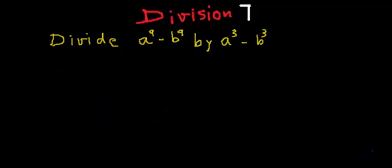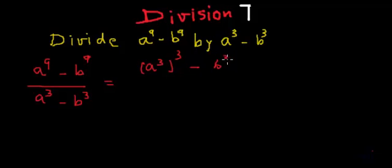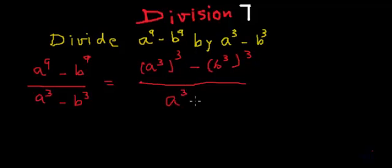So now let's rewrite our dividend in this format. a to the power 9 minus b to the power 9 divided by a cube minus b cube can be written as a cube whole cube minus b cube whole cube, divided by a cube minus b cube.